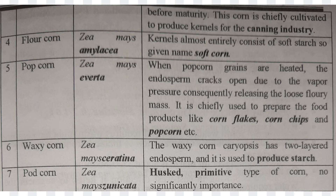The next one is Waxy Corn, Zea mays ceratina. Its karyopsis has two layers in the endosperm, and it is used to produce starch. The last one is Pod Corn, Zea mays tunicata. It is husked and is a primitive type of corn. It has no special importance.